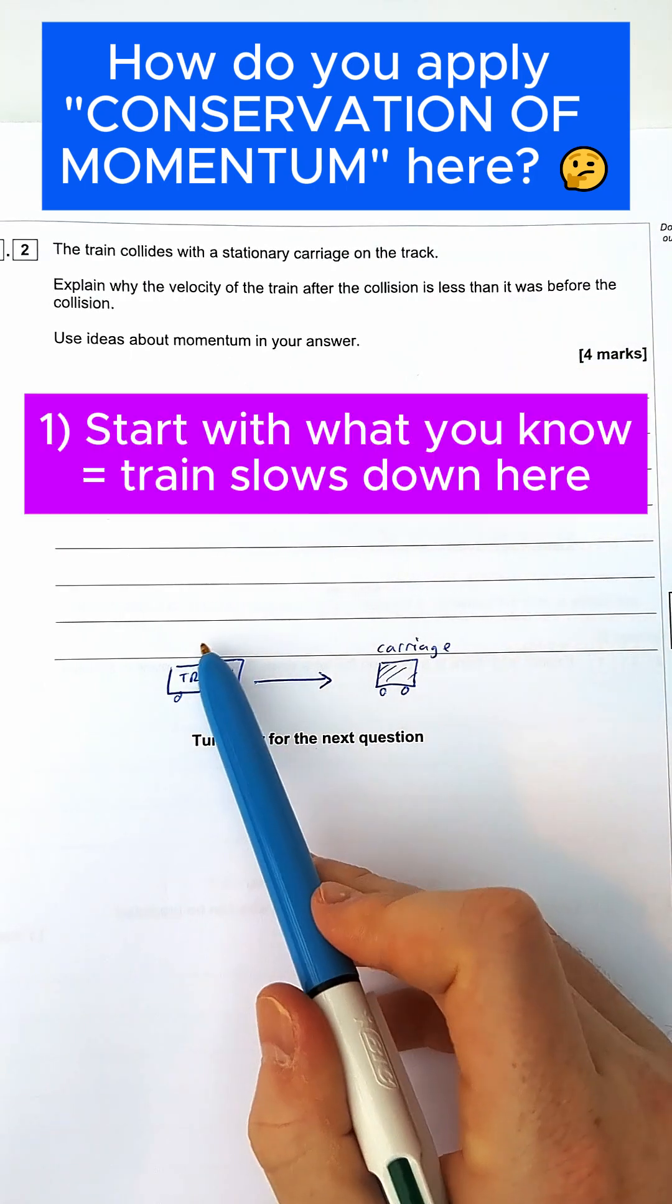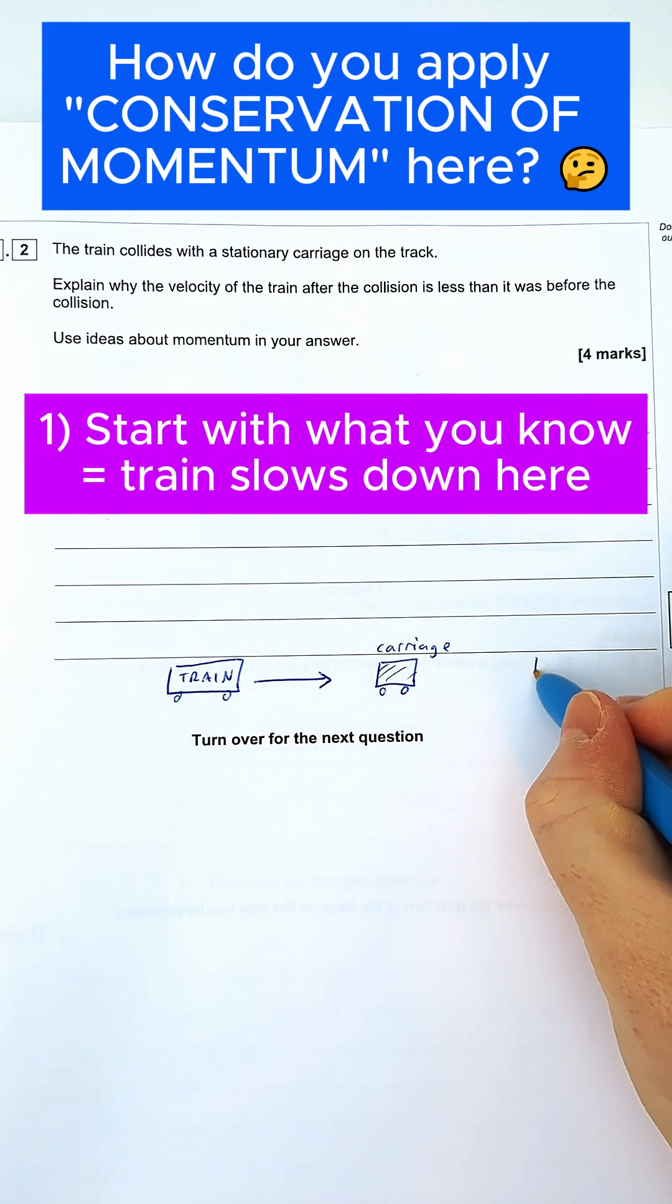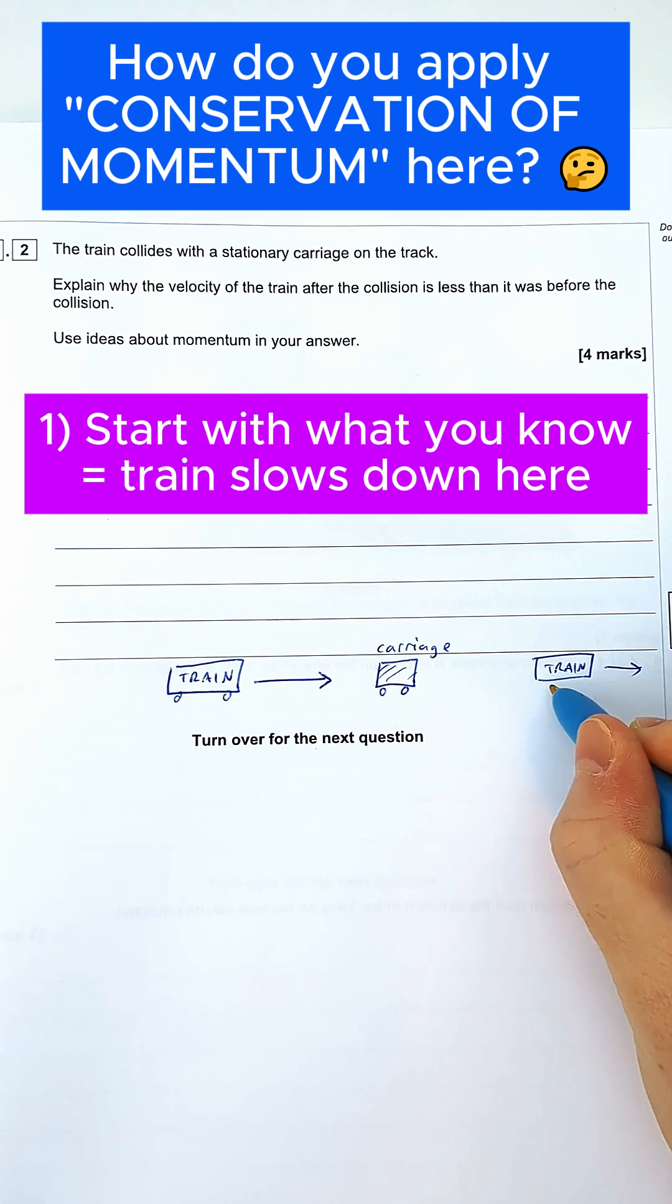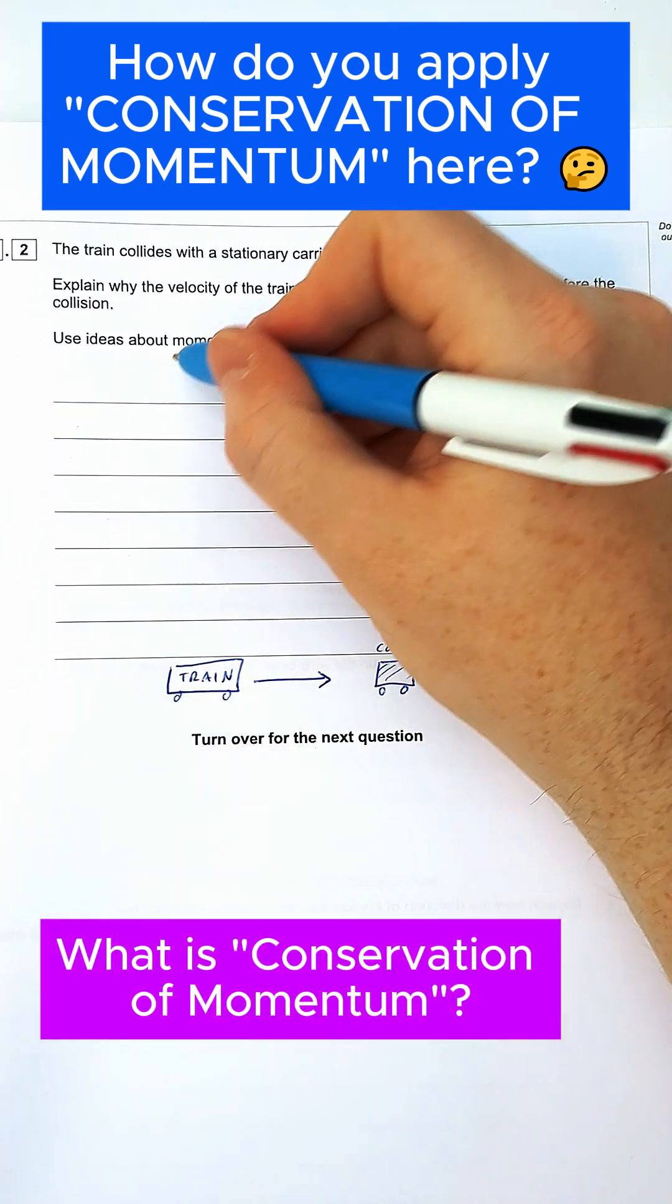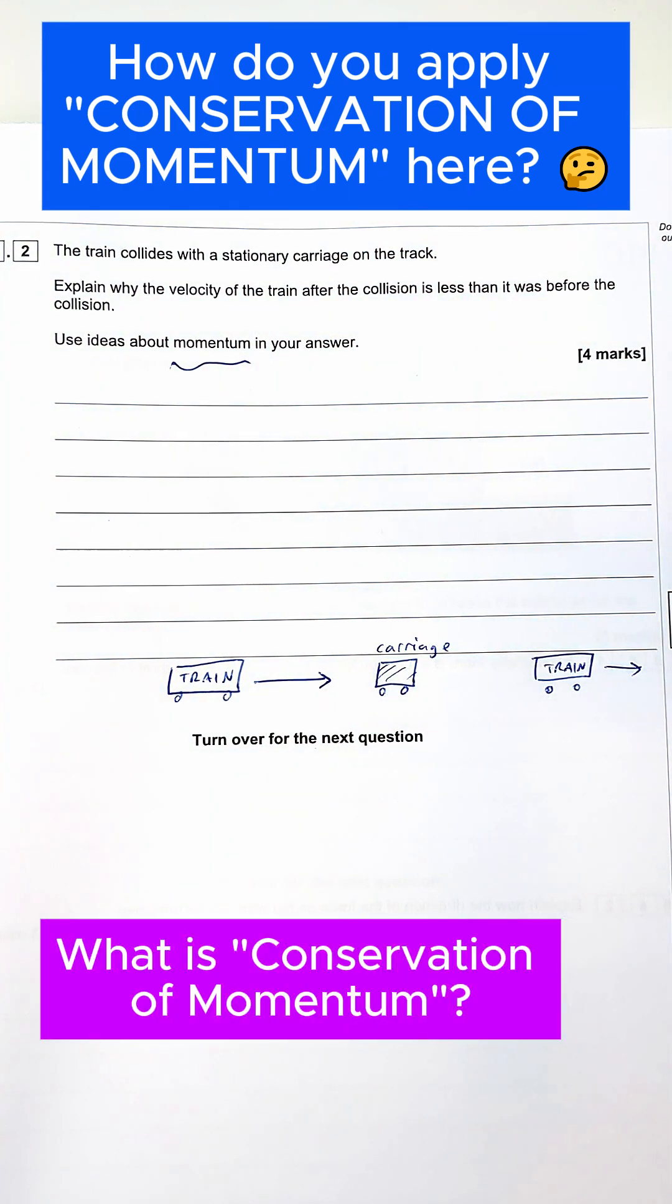It's one of those common sense things. If a train runs into a carriage and afterwards it still goes along, we should know it's going to travel slower. But how can we use physics to explain why that's happening? We've got to use the idea of conservation of momentum. That's why it gives us a hint: use the idea of momentum in your answer.